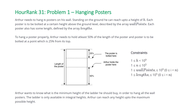The constraints for this problem are: h, the height that Arthur can reach, is between 1 and 10^9. The number of wall posters is between 1 and 10^5. The wallpoints and lengths values are between 1 and 10^9 and 1 and 10^5 respectively.